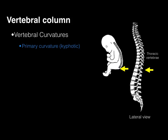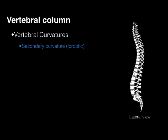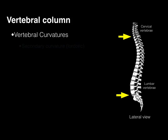In an adult, the cervical and lumbar regions develop secondary curves. These arise after the primary curve — in the cervical region when you learn to hold your head up, and in the lumbar region when you learn to walk and stand. These secondary curves are also called lordotic curvatures. An excessive curve in the lumbar region is referred to as lordosis.